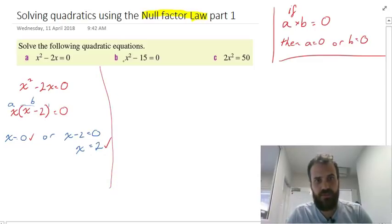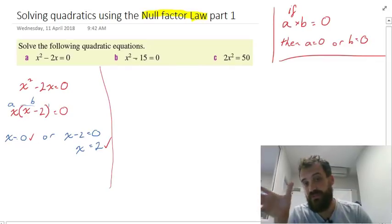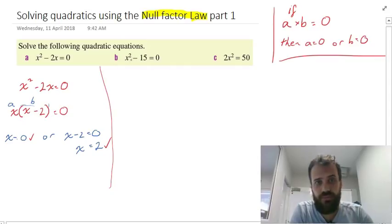Let's try this second question here. x² - 15 = 0. Now, this is a difference of two squares.